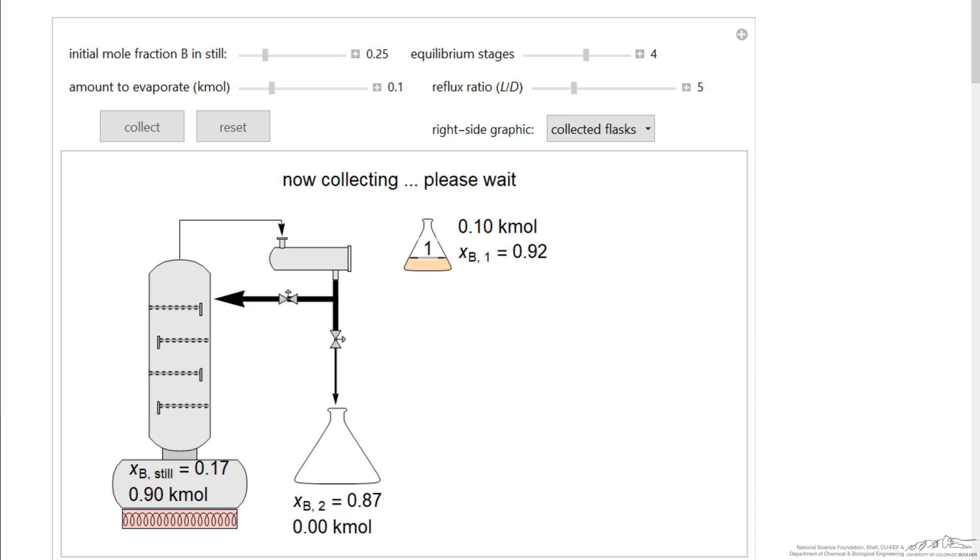If I hit collect again, we'll collect the next 0.1 moles. And now the mole fraction has decreased in the second flask because we've depleted it in the still.